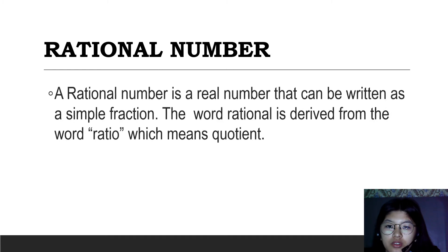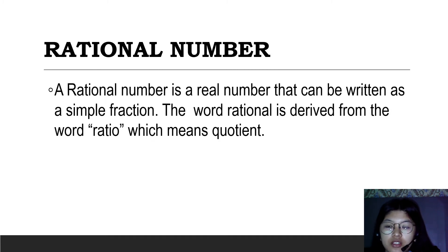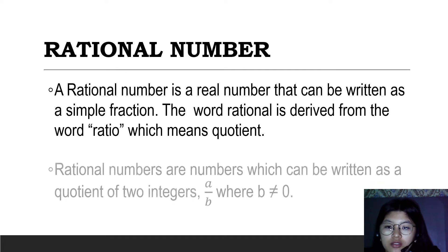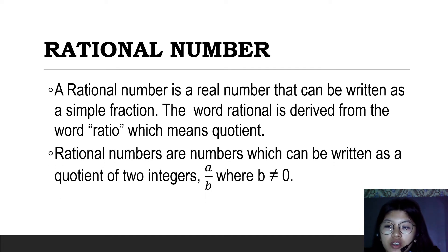A rational number is a real number that can be written as a simple fraction. The word rational is derived from the word ratio, which means quotient. Rational numbers are numbers which can be written as a quotient of two integers, A over B where B is not equal to 0.